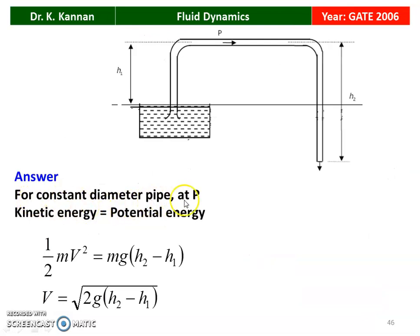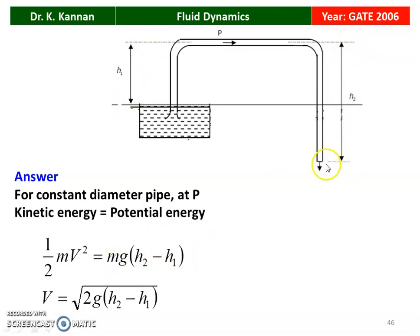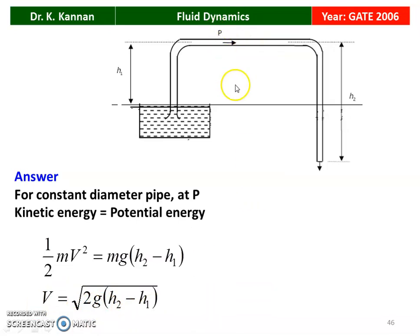For a constant diameter pipe through a siphon, at point P the kinetic energy equals the potential energy. Kinetic energy = ½mv², potential energy = mg(H2 − H1), where H2 is from the discharging end to the siphon and H1 is from the water line to the siphon. Cancelling m: V = √[2G·(H2 − H1)]. The velocity of water at siphon point P is √[2G·(H2 − H1)].